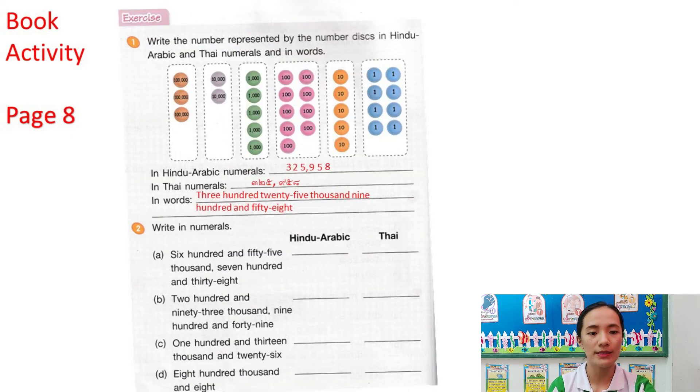Next, page 8. Number 1, write the number represented by the number disks in Hindu-Arabic and Thai numerals and in words. So, you need to answer the three: in Hindu-Arabic and Thai numerals and in words. Follow the example here in the screen.